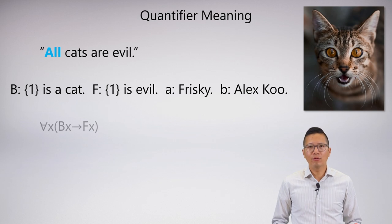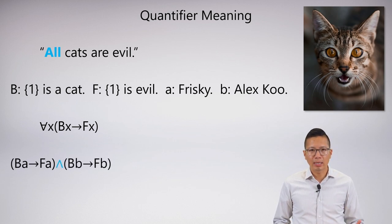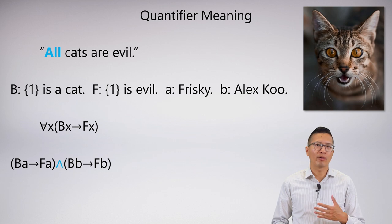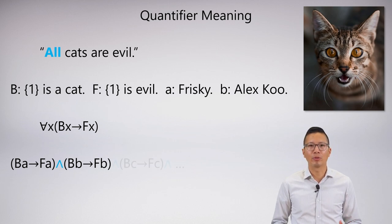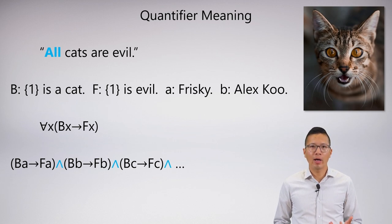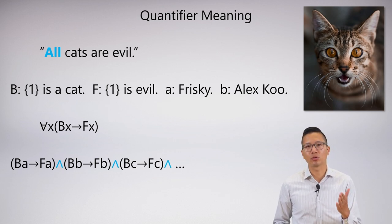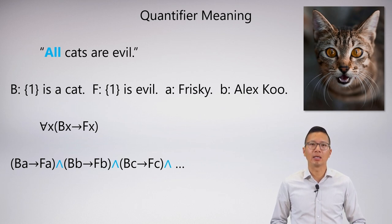So 'all cats are evil' — we know it's 'for all x, Bx → Fx.' If I look at all the substitution instances, it just means I'm replacing every single variable with every single possible name out there, and putting an 'and' after every one. Why? Because the universal says all of these things will be true. That's why I'm using the connective 'and' — this one is true, that one is true, that one is true, and so on. That's what the meaning of the universal is.